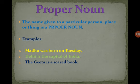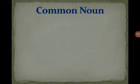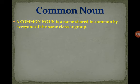Next: The Gita is a sacred book. What is the name here? The Gita is not someone's personal name — it is the name of a particular book, the only one of its kind in the world. So it is a particular name of a particular book, and therefore a proper noun.